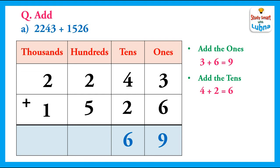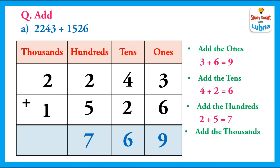After this, we will add the hundreds. 2 plus 5 equal to 7. We will write 7 in the hundreds column. And in the end, we will add the thousands. 2 plus 1 equal to 3. We will write 3 in the thousands column. So, the answer is 3769.